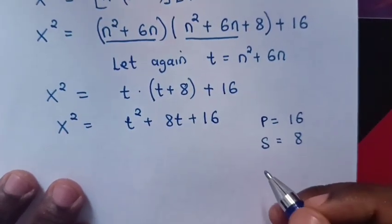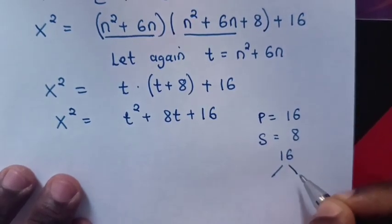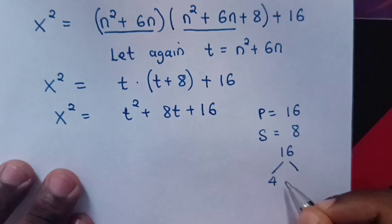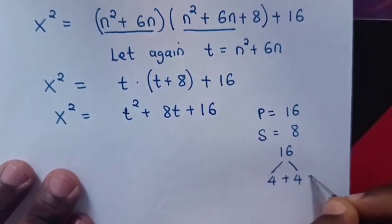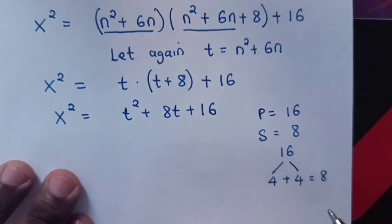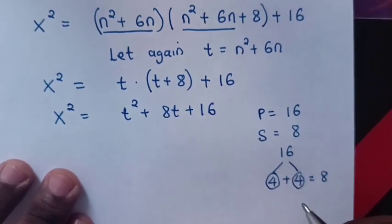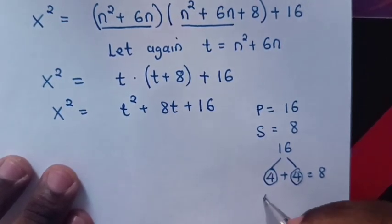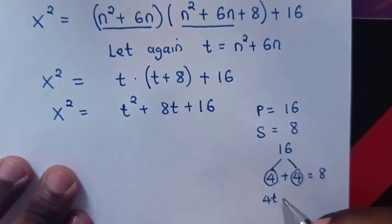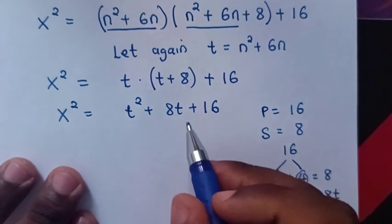To get a product of 16, we multiply 4 times 4. And the sum of 4 plus 4 is 8, which matches. So our factors are 4 and 4. In the equation, to get 8t, we write 4t plus 4t equals 8t. So we substitute this back in.